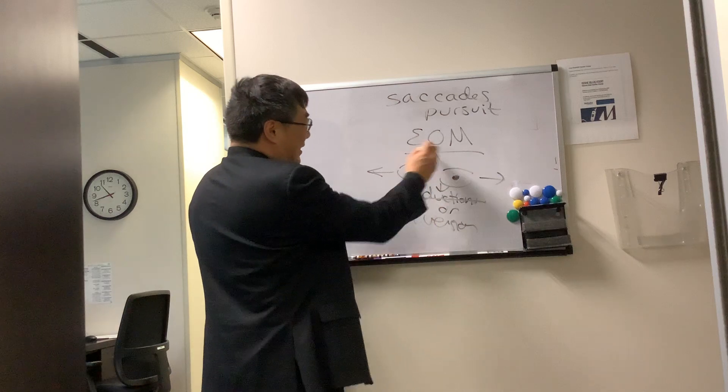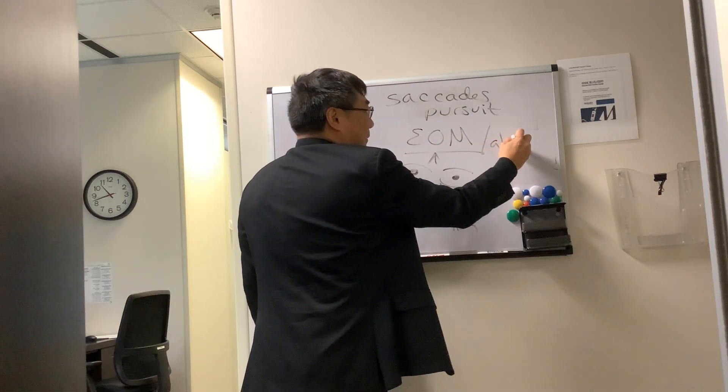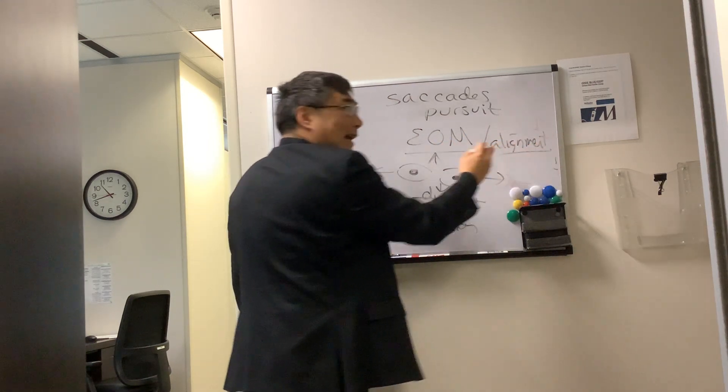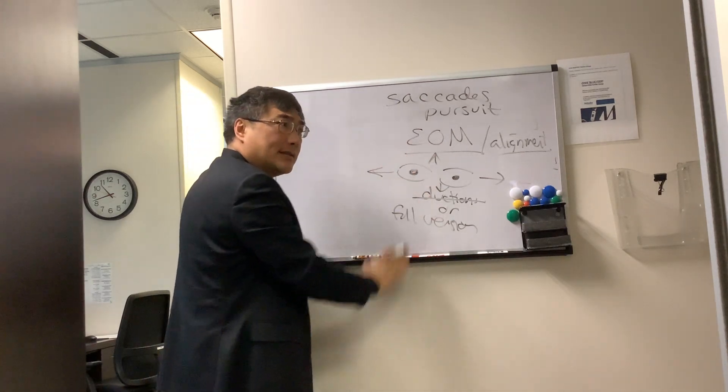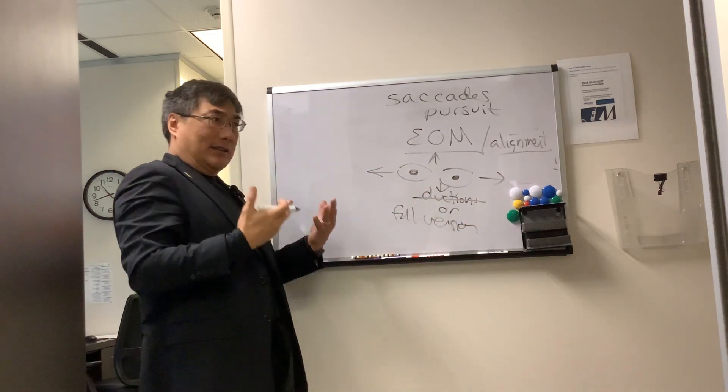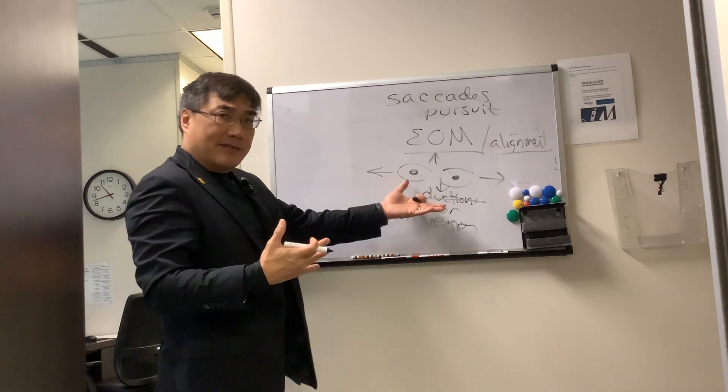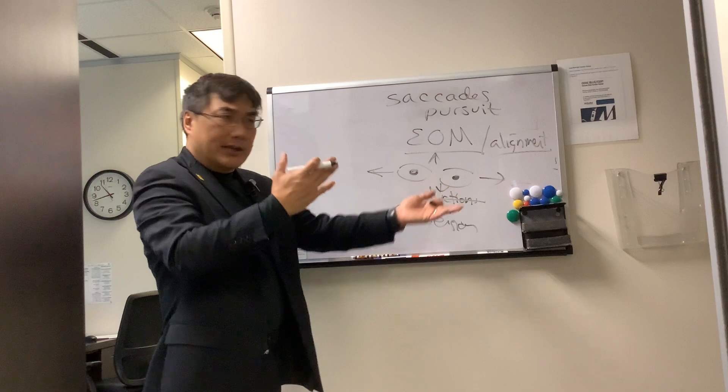And the second piece that we're looking for is alignment. Alignment, are the eyes straight? And we do that with a cover uncover test or an alternate cover test where we're trying to bring out a latent deviation rather than a manifest deviation.